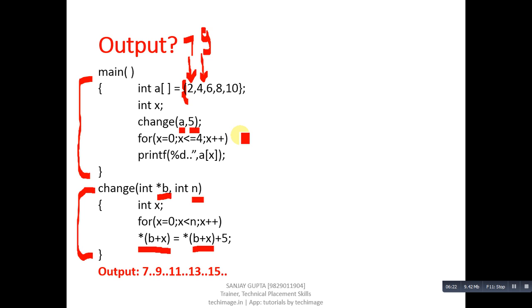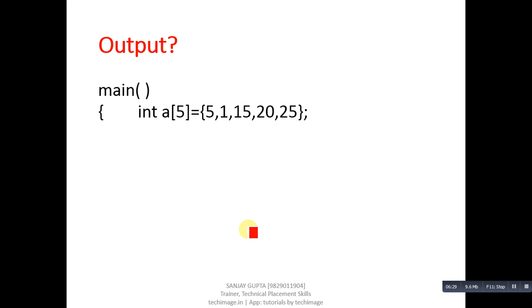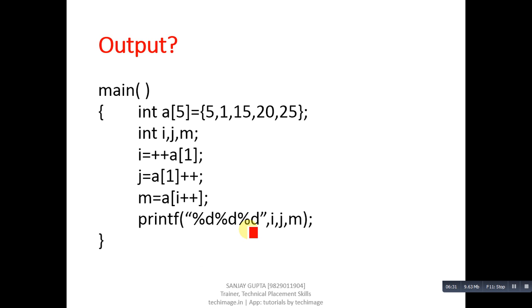This is another code segment. Here array is initialized, then it is incremented in three various statements. Then printf is printing value of i, j, and m. You have to find its output. Its output is: i=3, j=2, and m=15.